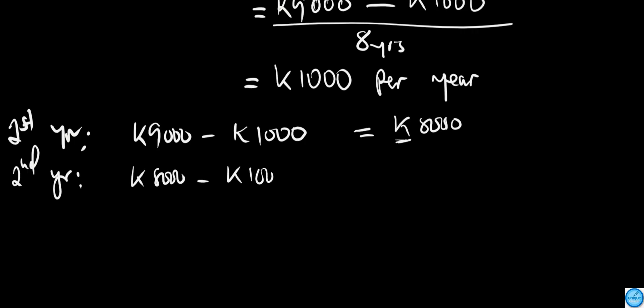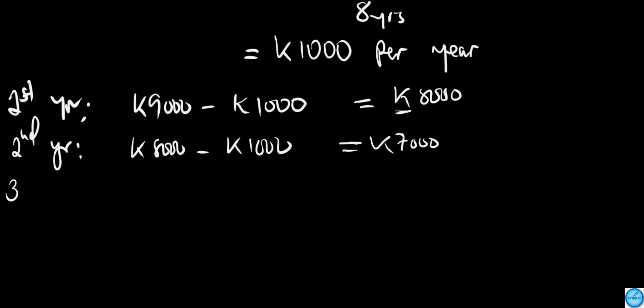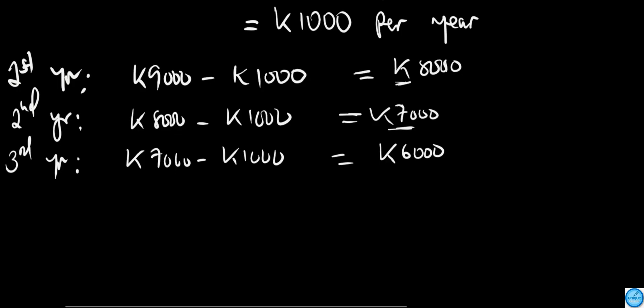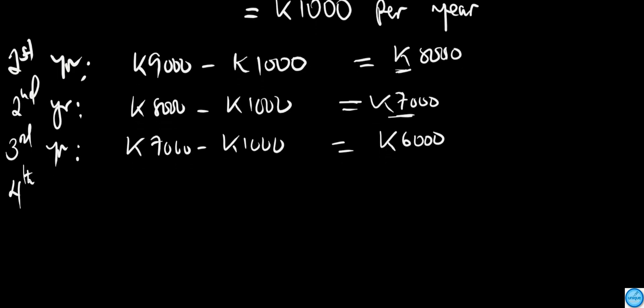This K1,000 is the depreciation per annum. The value will be K8,000 in the first year. For the second year, the previous year's value minus K1,000, which is our depreciation per annum as calculated from the question.